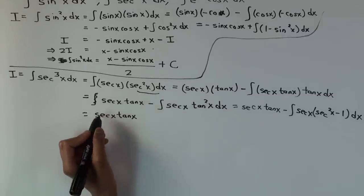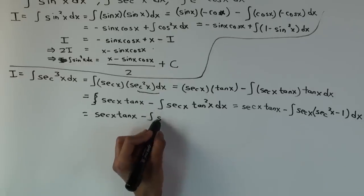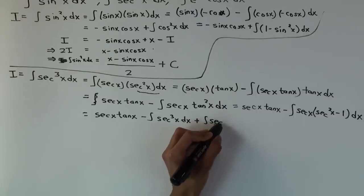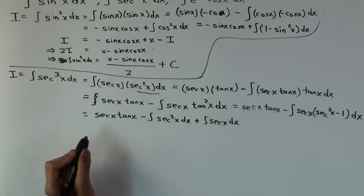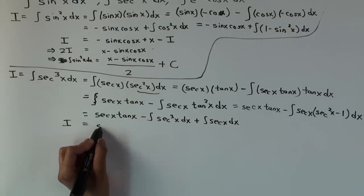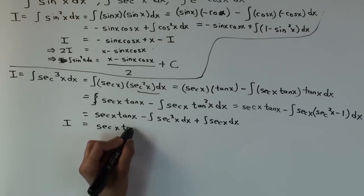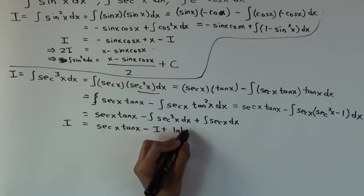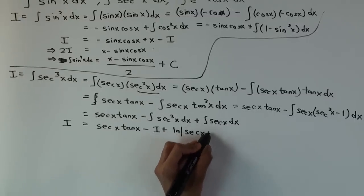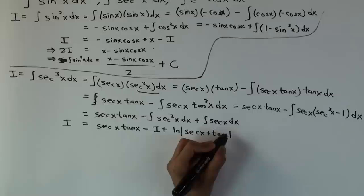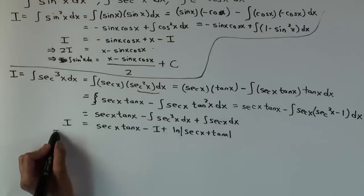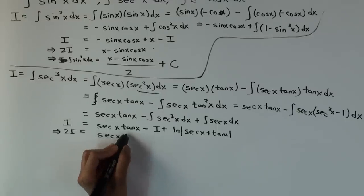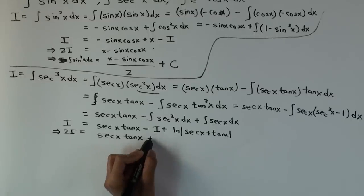Remember to keep copying down this term. This becomes the integral of sec³(x) dx plus the integral of sec(x) dx. So we get: I = sec(x)tan(x) − I + ln|sec(x) + tan(x)|. Now rearrange, bring the 2 down, and add plus C for the general integral.